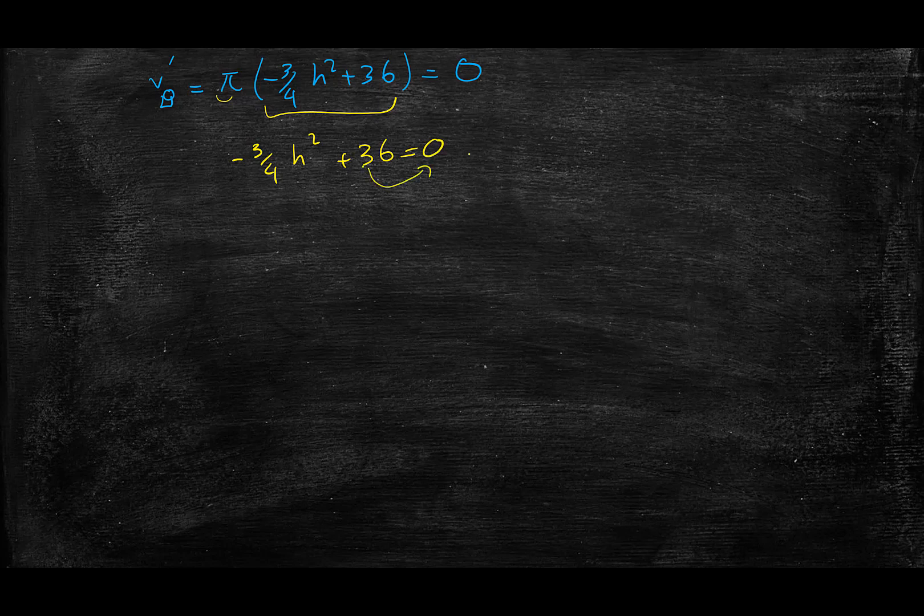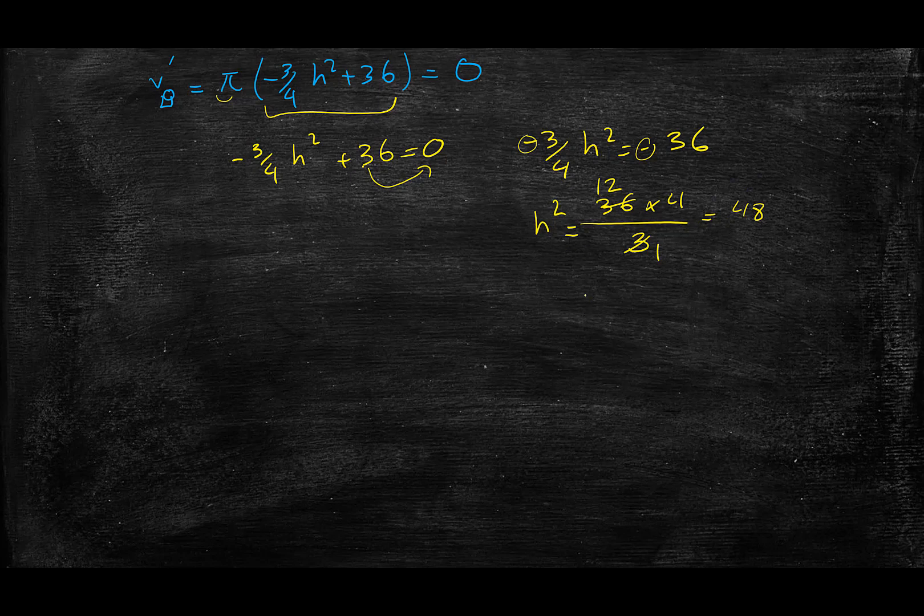The minus signs cancel out, so h² = 36 × 4 / 3. 36 divided by 3 is 12, times 4 is 48. Since h² = 48, h = ±√48. Since h is just the side of my cylinder, I will accept a positive number and that will be my h.